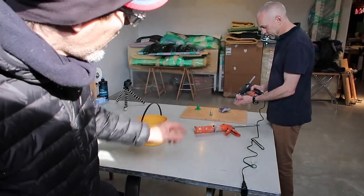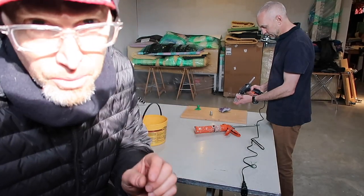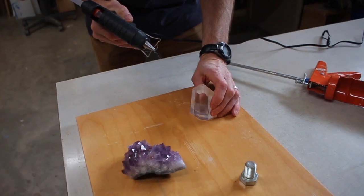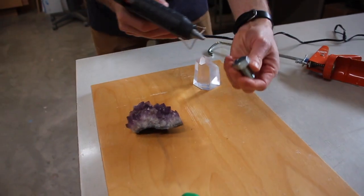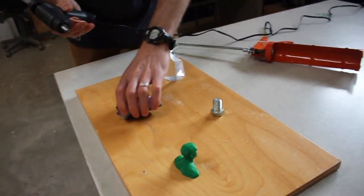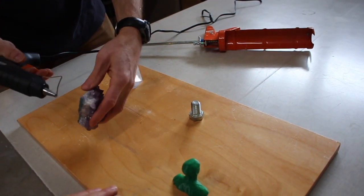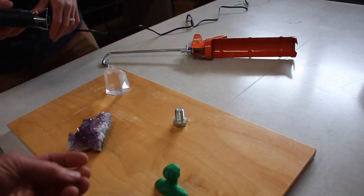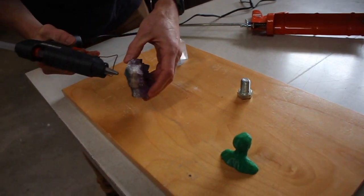Step number one is to hot glue our little objects to the board. That's just because we don't want them to move around when we're massaging them with the silicone. And you're just using like a varnished piece of plywood. Yeah. Thinking that the silicone will release from it easier.